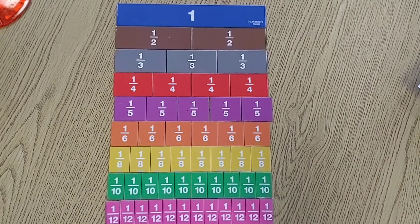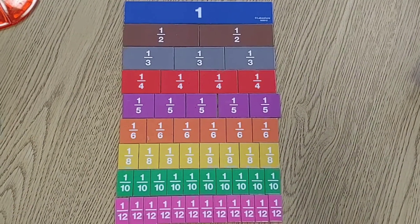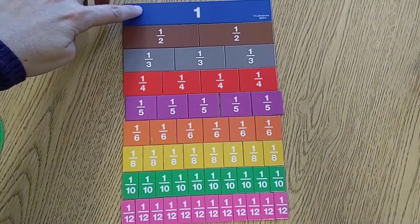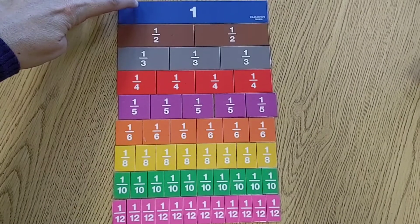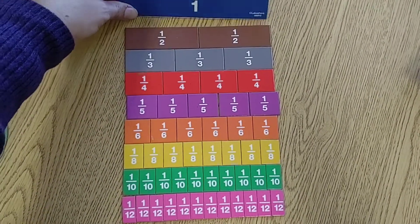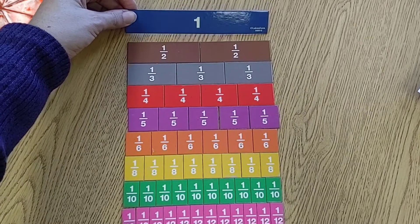These are fraction bars. They show a fraction of a whole. We're going to start with this one up top. This is a whole. It is not broken up into smaller pieces. It's one whole.